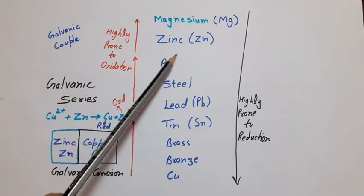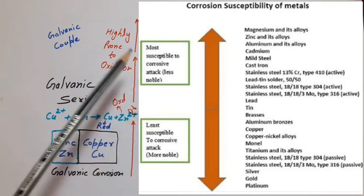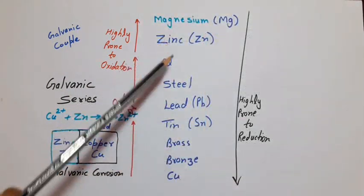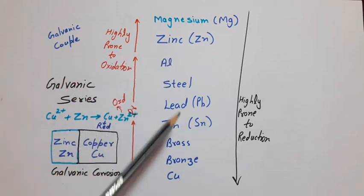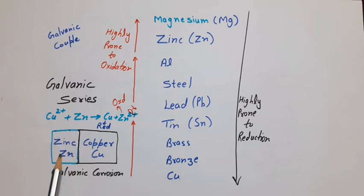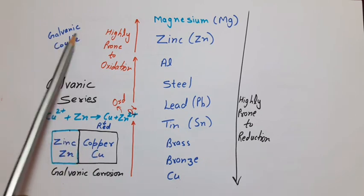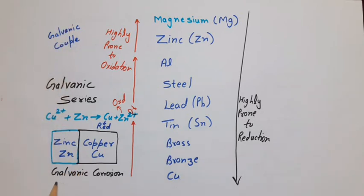This series is known as galvanic series. The complete galvanic series is shown in the picture. Now suppose we pick two elements which have a large gap in this series. For example, one element is zinc and another one is copper. If we place zinc and copper metal side by side, then this couple has a very high tendency for corrosion, because zinc will get easily oxidized and the free electrons released by zinc will be absorbed by copper, and copper gets reduced. Here zinc will act as an anodic site and copper will act as a cathodic site. Due to high tendency of electrochemical reaction for this couple, which is known as galvanic couple, this type of corrosion is known as galvanic corrosion.